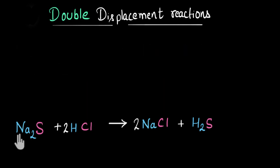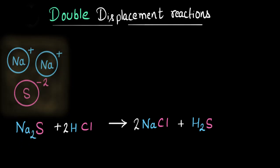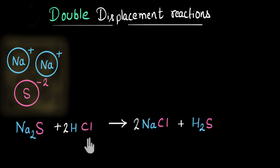So here I have sodium sulfide, Na2S. Now if I put this in water — meaning I'm taking an aqueous solution of sodium sulfide — then this molecule is going to dissociate or break down into its ions. I will get sodium ion and sulfur minus 2 ion. Many molecules when put in water will dissociate into their ions. Similarly, HCl when put in water will also dissociate into hydrogen ion and chlorine ion.